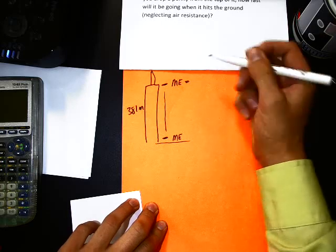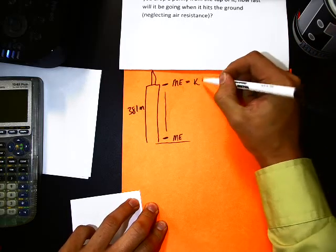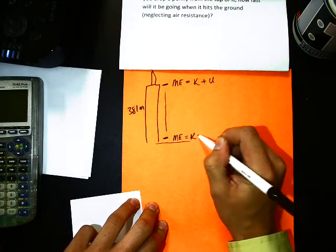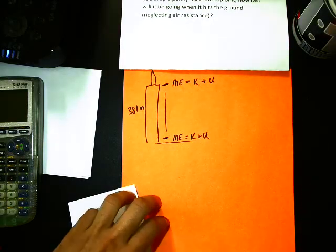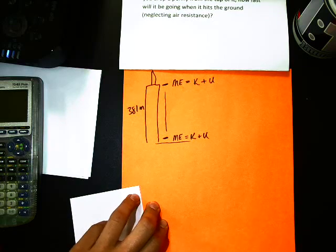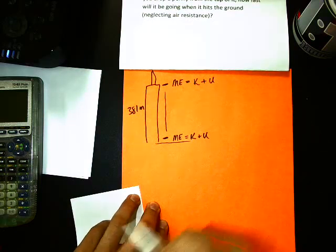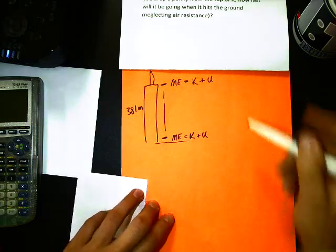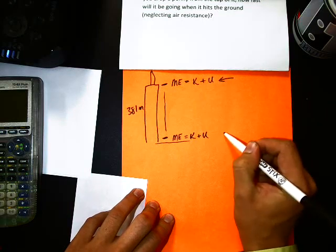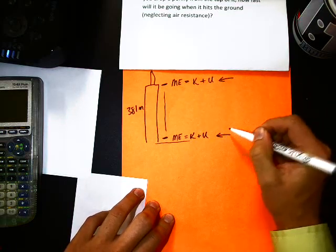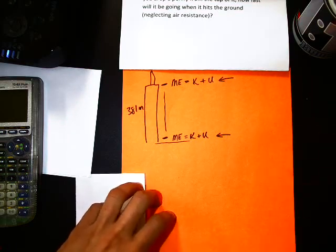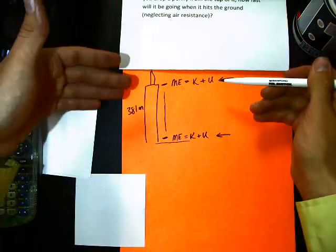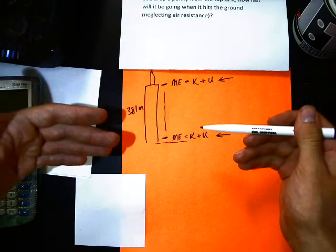So at the top, there is a certain amount of mechanical energy. Mechanical energy is the total energy, kinetic plus potential. So there is mechanical energy here. There is mechanical energy down here. There's actually mechanical energy everywhere. But we're only concerned about the top and the bottom part. Because one, we're dropping it from the top, and two, it's hitting the bottom. Mechanical energy consists of two things, kinetic and potential, combined to create mechanical energy.